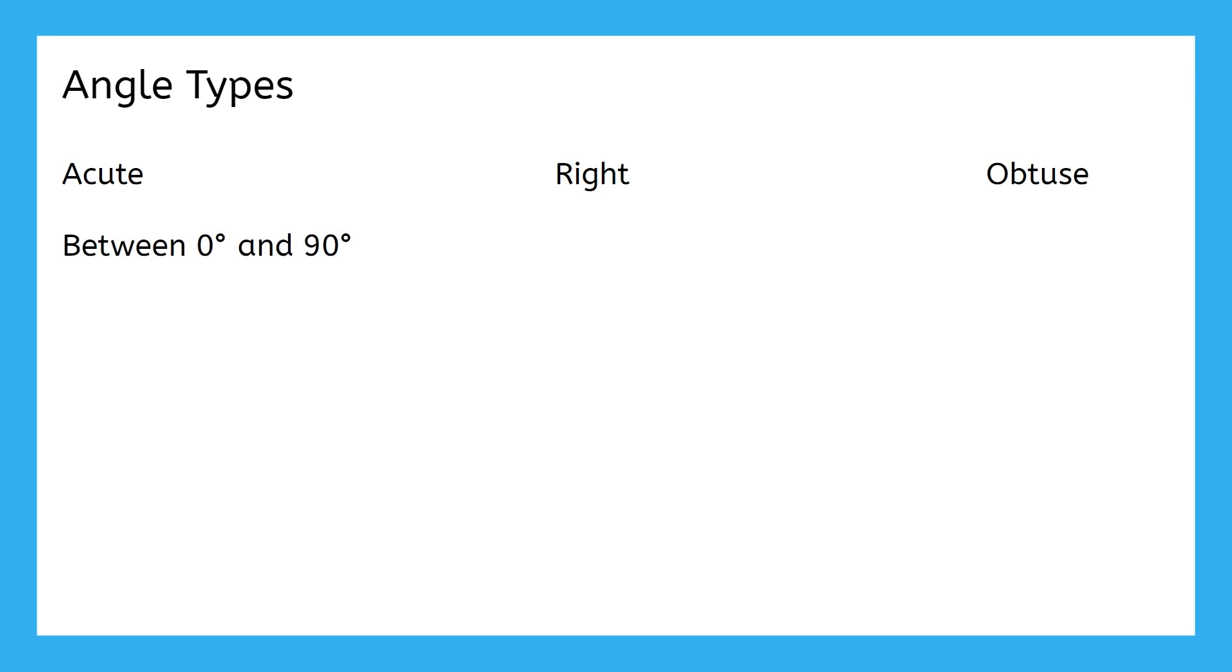Acute angles are between zero degrees and 90 degrees. Right angles are exactly 90 degrees, and obtuse angles are between 90 degrees and 180 degrees. Take a moment now to write the definitions for these in your notes template. Then, underneath those definitions is a practice problem to try. See what you can come up with on your own.